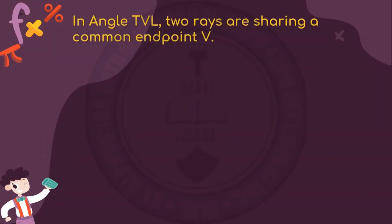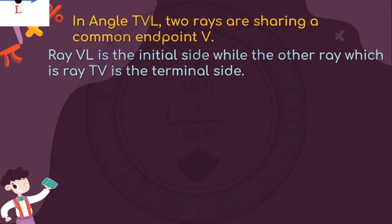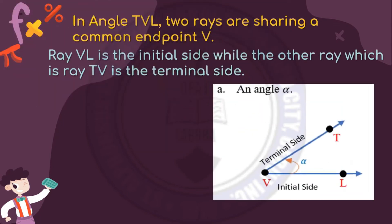In angle TVL, two rays are sharing a common endpoint V. In figure A, ray VL is our initial side, while the other ray, which is ray TV, is the terminal side.